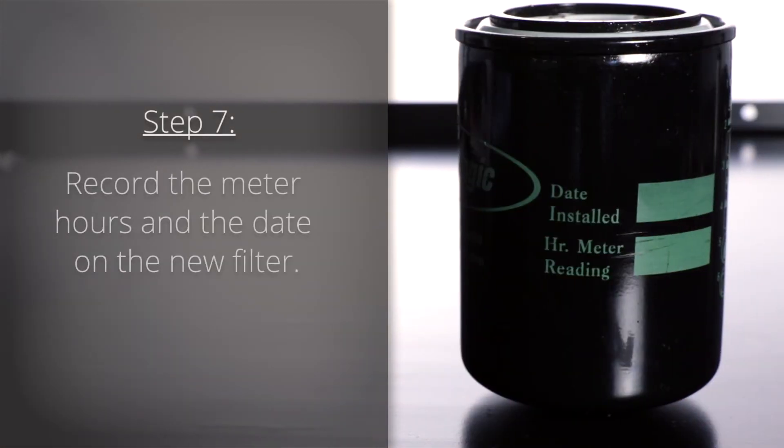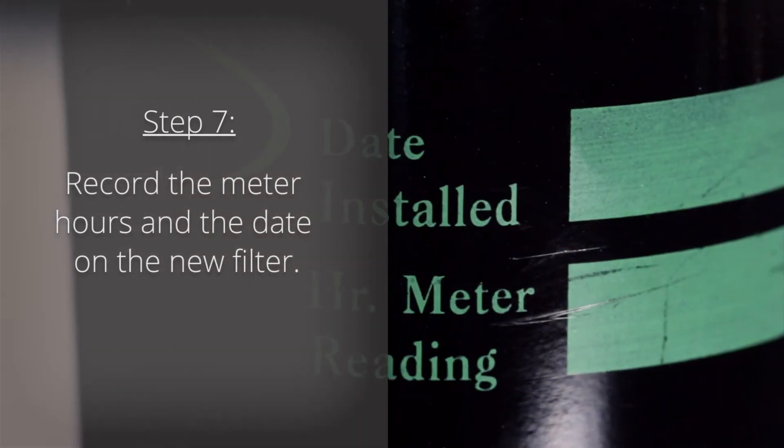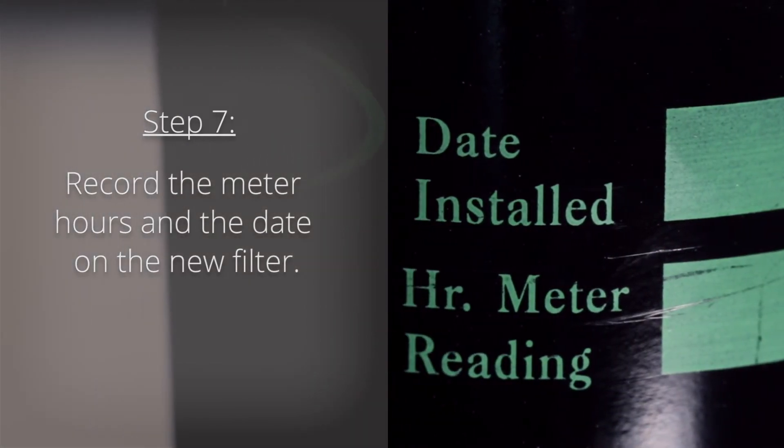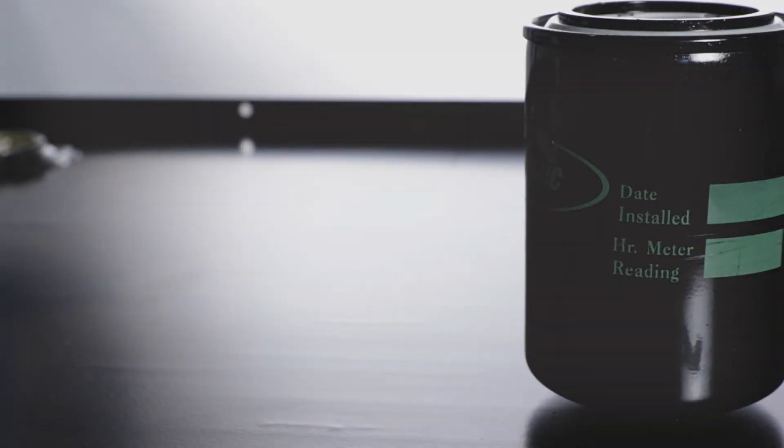Step 7: Record the meter hours and date on the new filter. This will help you adequately measure rising mercury levels throughout the life of the filter. Your system is now ready to be primed.